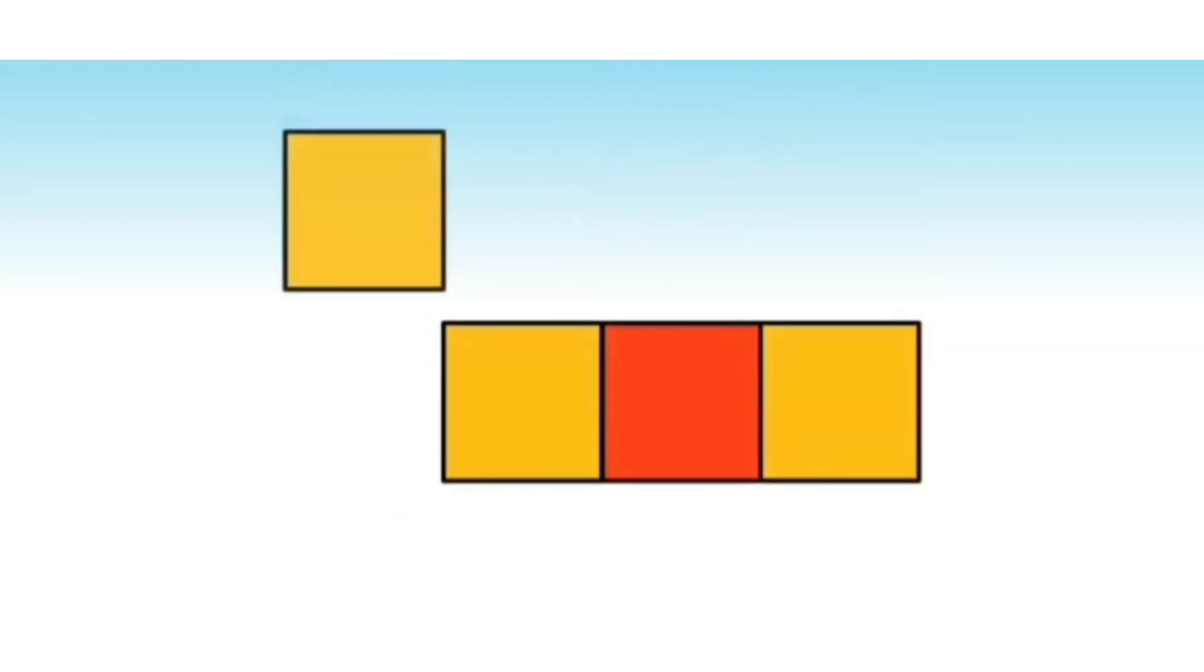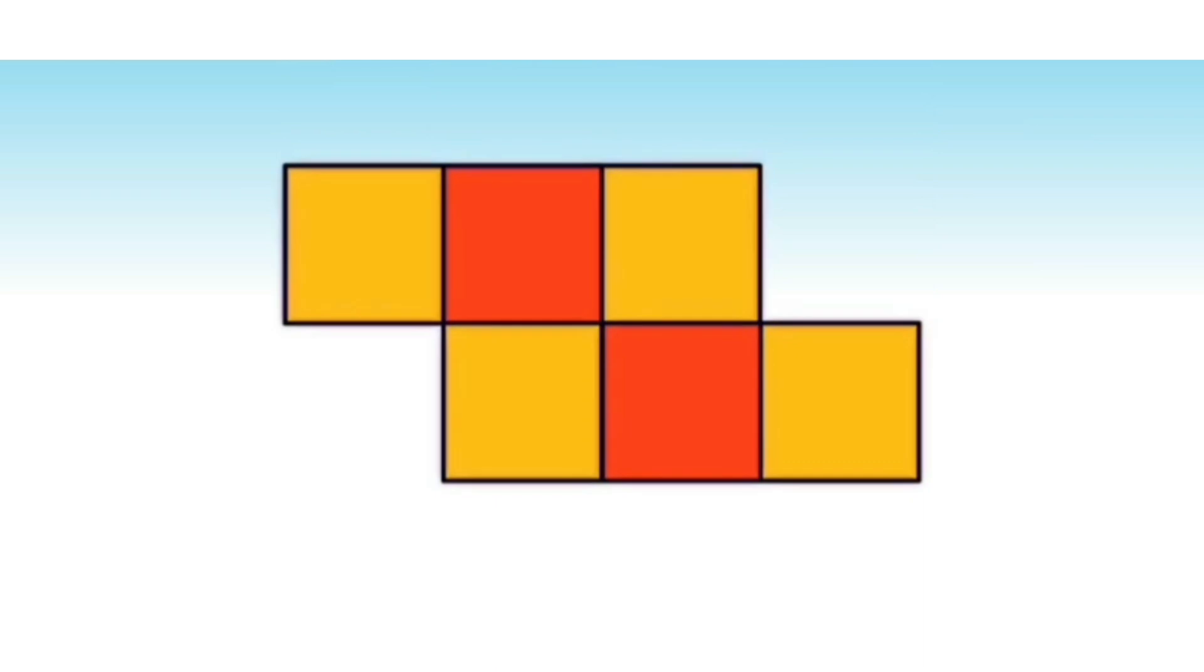Now come, let's arrange square tiles. Students, in square tessellation, squares are arranged in a particular pattern. Apart from floors and roads, can you tell where square tessellation is visible? Yes, it is visible in checkerboard. Checkerboard is the best example of a square tessellation.